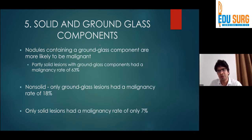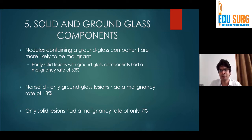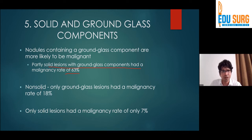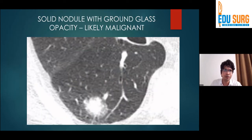Most nodules are solid lesions, but there can be either central or some peripheral areas of ground glass components. Generally malignant lesions have some associated ground glass element. If the lesion is partially solid with ground glass components, the probability of malignancy is about 63%. If it is a non-solid lesion with only ground glass appearance, then 18%. Only a solid lesion has a probability of around 7% of malignancy. An example shows a solid nodule with a peripheral area of ground glass, making it more likely to be a malignant lesion.